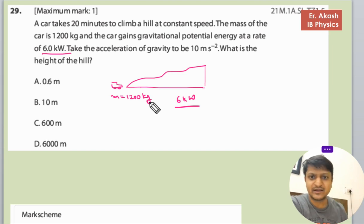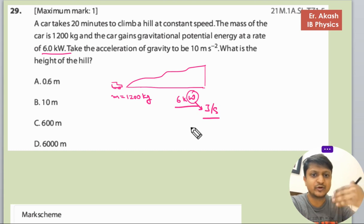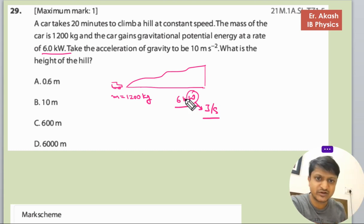The car is gaining potential energy. This means joules per second - as seconds increase, the potential energy is increasing. The rate is given, not the potential energy. Don't confuse it with the potential energy - it's the rate of potential energy.